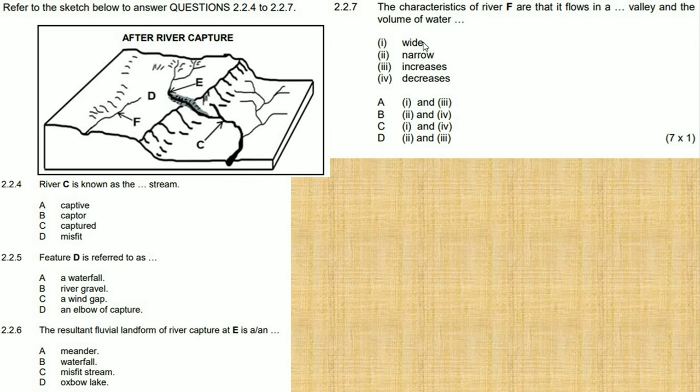The characteristics of F are that it flows in a wide valley because remember at first it had a large volume of water flowing inside, but now because of the river capture it consists of less water flowing in it. So it will be wide but with less water flowing, and the volume of water will have decreased.